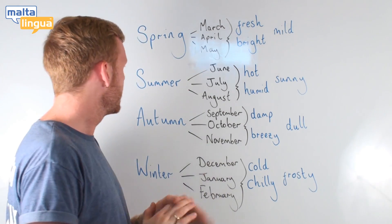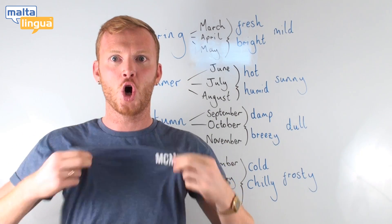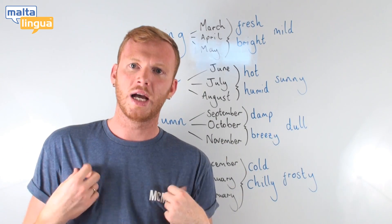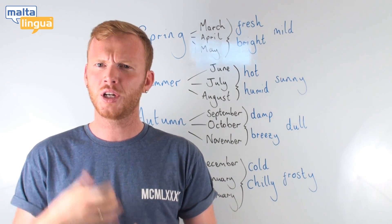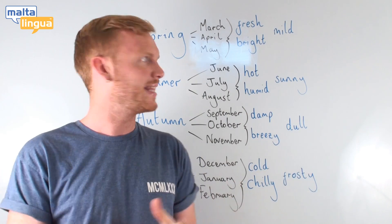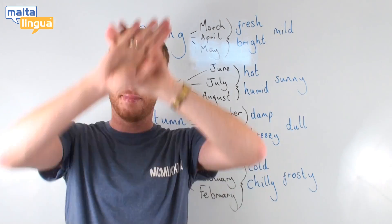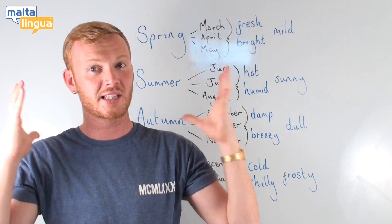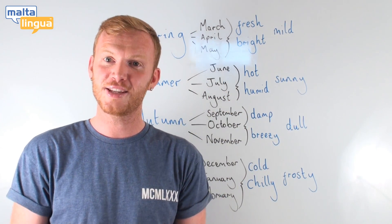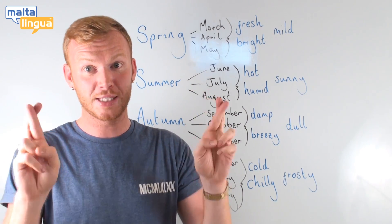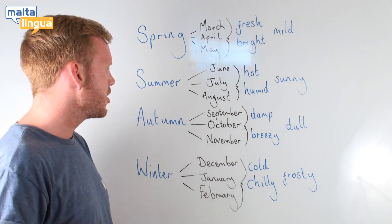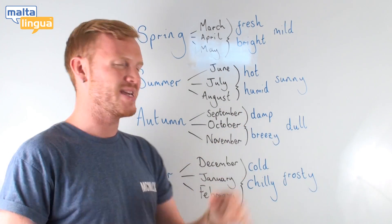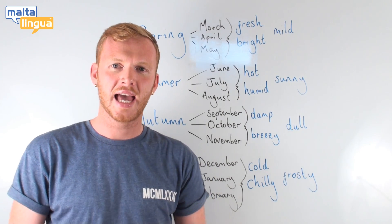In summer, it starts to get hot, referring to temperature. 'Humid' relates to temperature and water in the air. 'Sunny' — that beautiful yellow ball in the sky, the sun, which causes it to be sunny in the summertime, or at least we hope so. In the autumn, we might describe the weather as being damp, breezy, and dull.